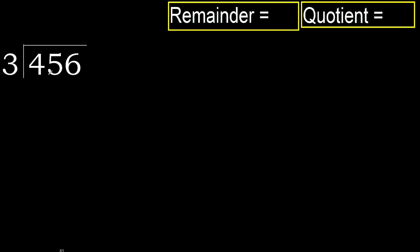456 divided by 3. 4 is not less, therefore with 4: 3 multiplied by which number is nearest to 4 but not greater? 3 multiplied by 2 is 6 — 6 is greater. Multiplied by 1 is 3, which is not greater. Subtract: 4 minus 3 is 1.